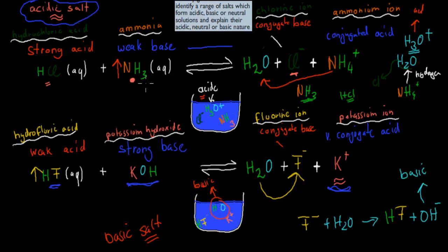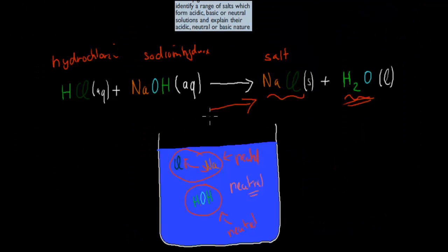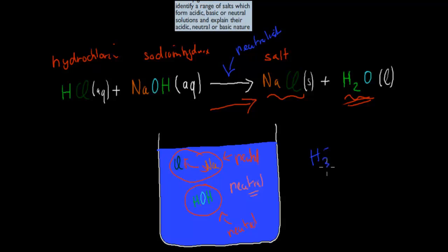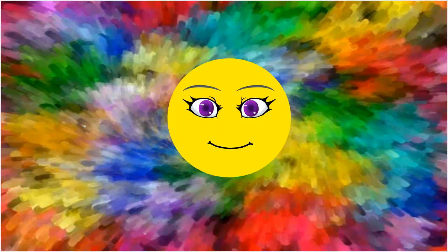So to summarize: a strong acid plus a weak base makes an acidic salt — the solution will be slightly acidic. A weak acid plus a strong base makes a basic salt — the solution will be slightly basic. Whereas a strong acid plus a strong base gives complete neutralization, so the solution of the salt will be neutral — no hydronium ions or hydroxide ions floating around, it's all in water. I hope that was useful. Thank you for watching.